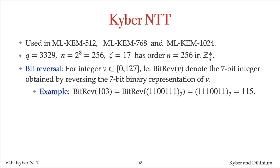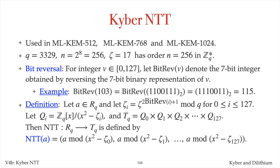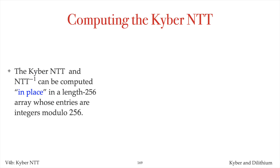For the case n equals 256 in Kyber, the modified NTT can be conveniently defined as follows. For integers v between 0 and 127, let bitrev(v) denote the 7-bit integer obtained by reversing the 7-bit binary representation of v. For i between 0 and 127, let zeta_i be zeta to the power 2 times bitrev(i) plus 1 modulo q. Then the NTT of a is defined to be this vector. The reason for this ordering of the zeta_i's is that it facilitates an in-place computation of the Kyber NTT and its inverse. Like the Dilithium NTT, the Kyber NTT and its inverse can be computed in place, as described in FIPS 203.